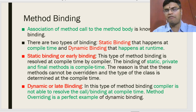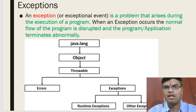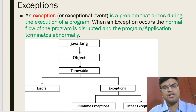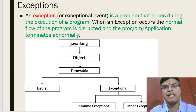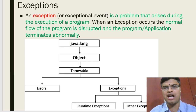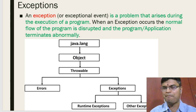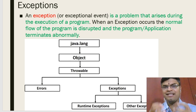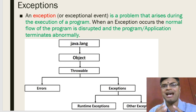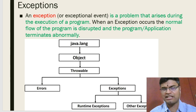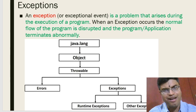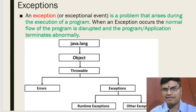We will move on to the next topic: exceptions. Exceptions basically mean that whenever you are trying to execute your Java program, due to some abnormal condition the program is terminated abnormally. These kinds of exceptions normally occur at runtime. It is a problem that arises during execution of the program where the normal flow is disrupted and the application terminates abnormally.